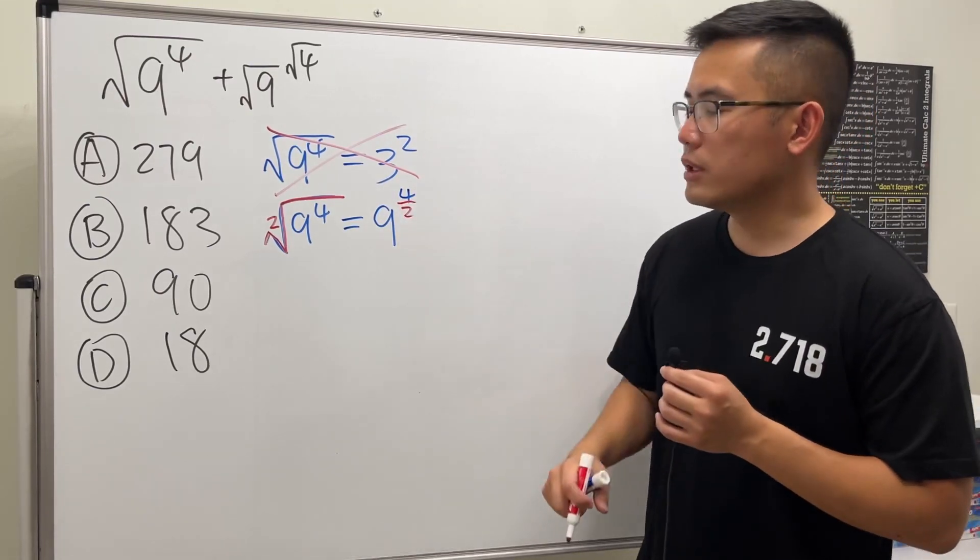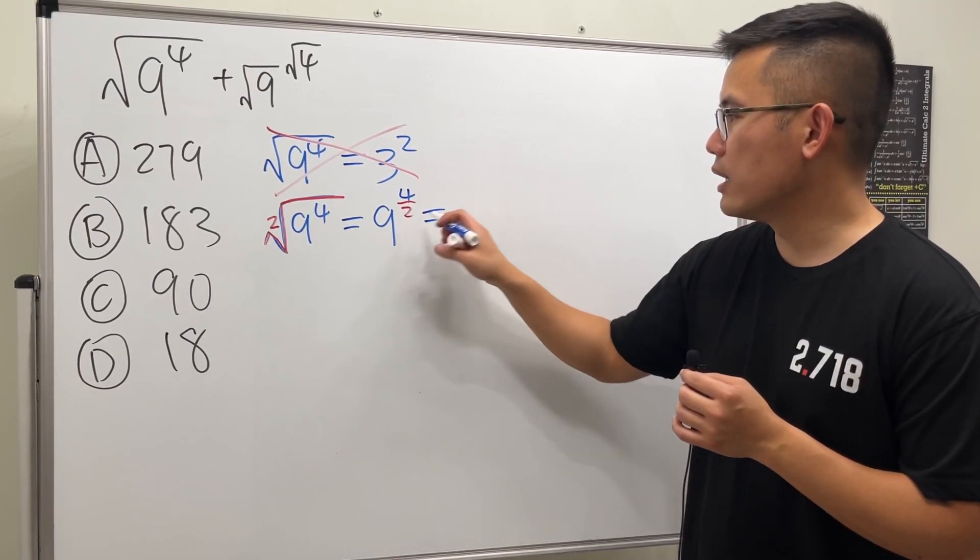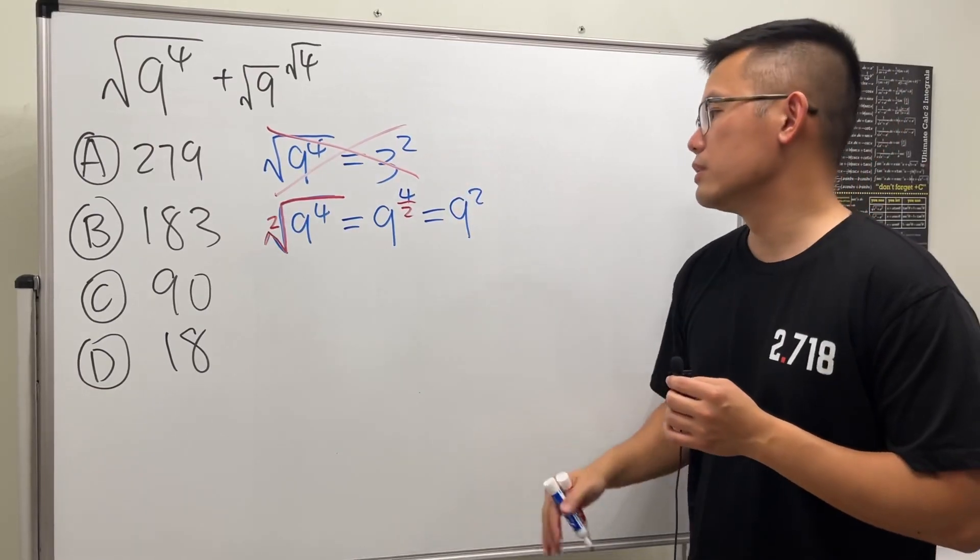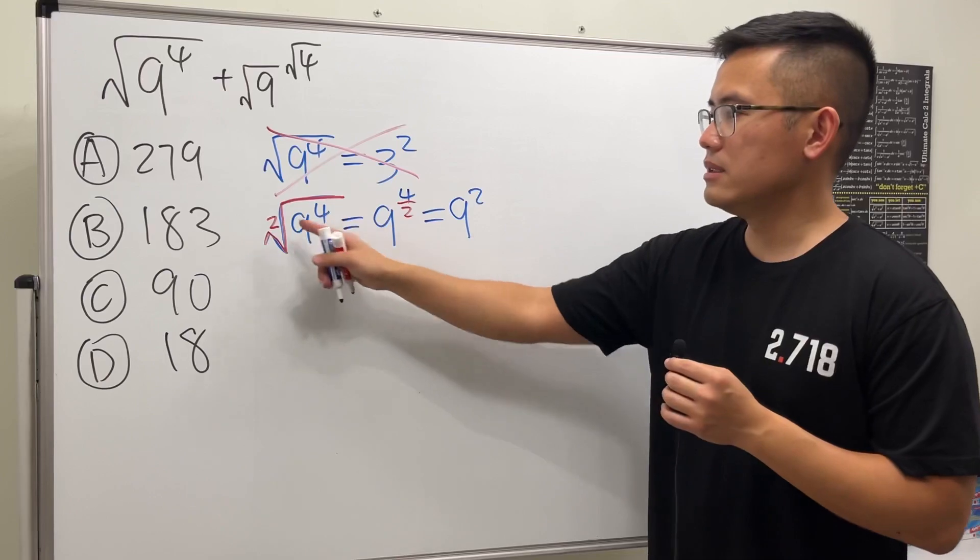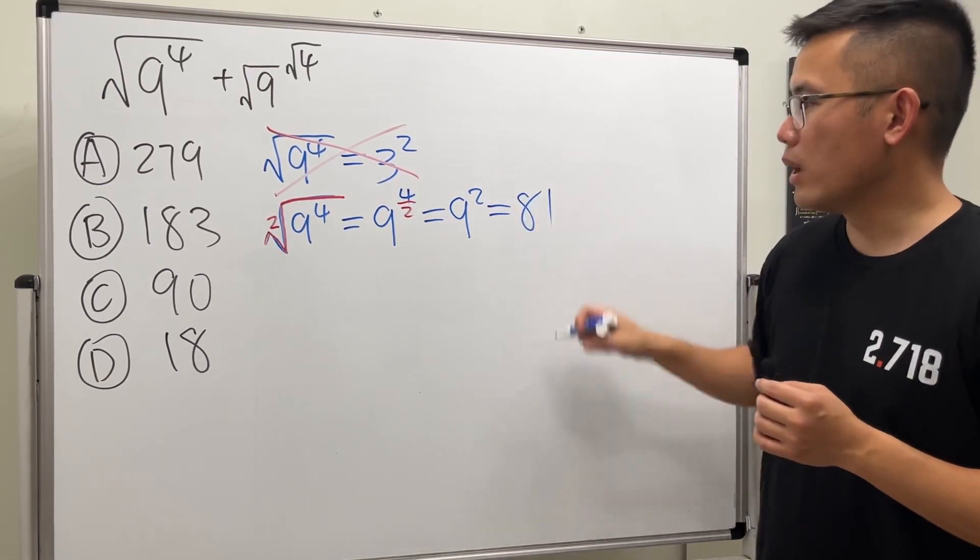So you have a rational expression like this, and then you can reduce that. This becomes 9 to the 2nd power. So this is how you simplify when we have an exponent inside a square root. And if we work that out, this will be 81.